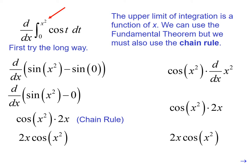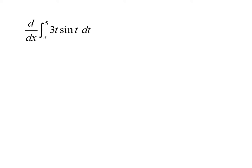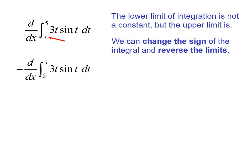We have the derivative of an integral, but notice the limits of integration are switched — we have the variable on the bottom and the constant 5 on top. We know that if we switch the limits of integration, we just change the sign. So this is the negative of the derivative of the integral. Applying the fundamental theorem gives us negative 3x sine of x.